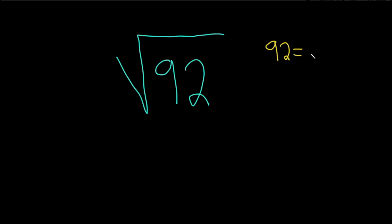Well, if that's not obvious, it's okay. Let's just start factoring. So 92 is 2 times 46. That's because 90 is 2 times 45, so 92 would be 2 times 46.